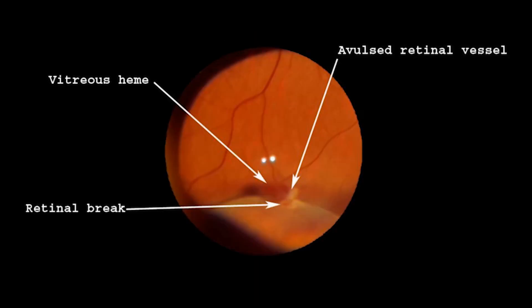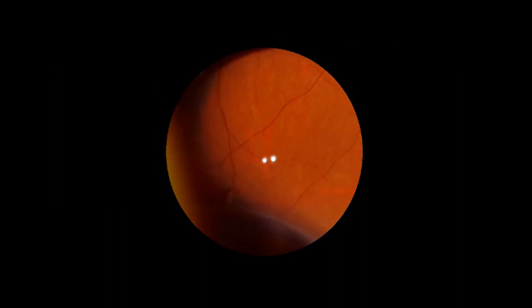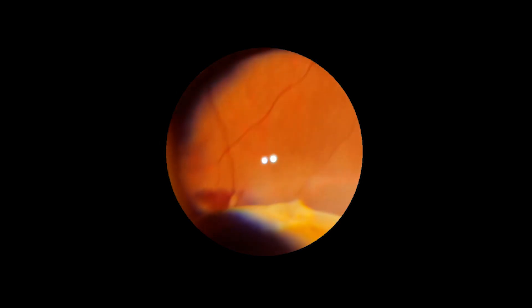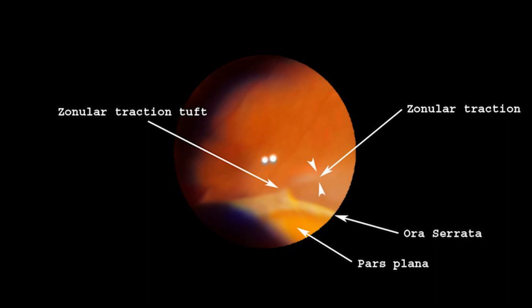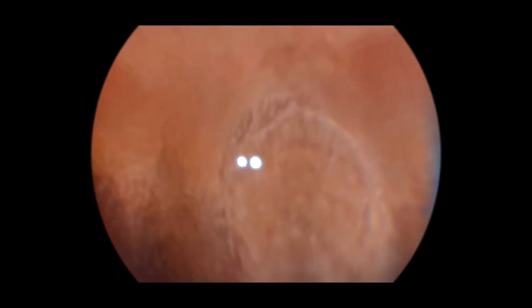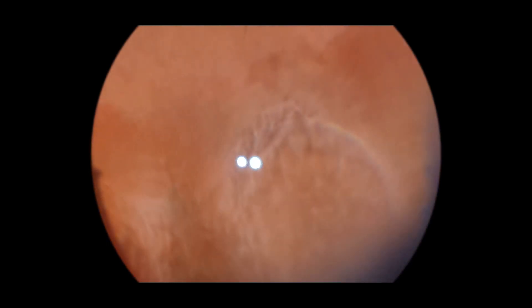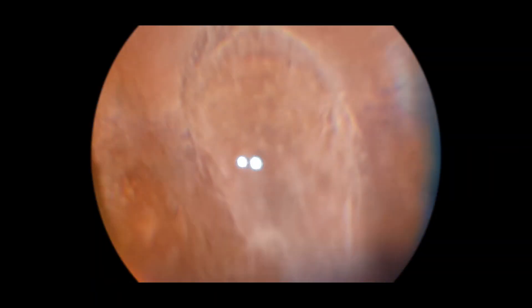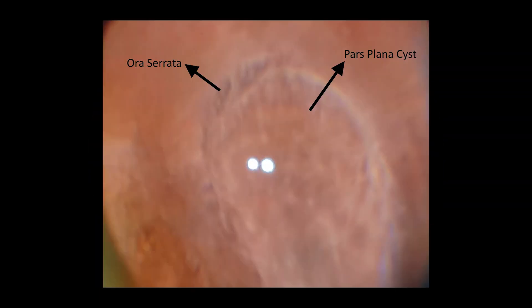The next patient is a young gentleman who presented with floaters following trivial trauma. He had an avulsed retinal vessel, vitreous haemorrhage, and retinal break. Looking anteriorly, there was condensation of the vitreous which extended up to a zonular traction tuft. Here you can see the ora serrata, the pars plana, and the zonular traction tuft with zonular traction at the tip of the tuft. Because of its location in the far periphery in the pars plana, a pars plana cyst is rarely documented. They are seen in about 5 to 10% of individuals, have no clinical consequences, are supposed to contain hyaluronic acid, and the lateral boundaries of the cyst are usually the ora base.